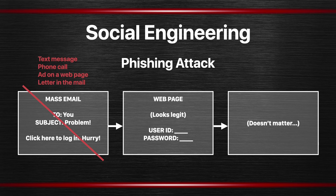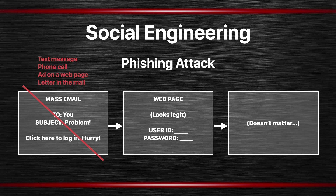Phishing attacks don't have to come as email. They can come as a text message or a phone call. People call you and tell you something is wrong with your computer, an Amazon order, or your bank account. It could even be an ad on a webpage — a legitimate page where an ad slips into the advertising network saying there's a problem with your computer, popping up to look like an alert. This could even be used in the real world as a physical letter pretending to be from your insurance company, credit card company, or bank, asking you to contact them.